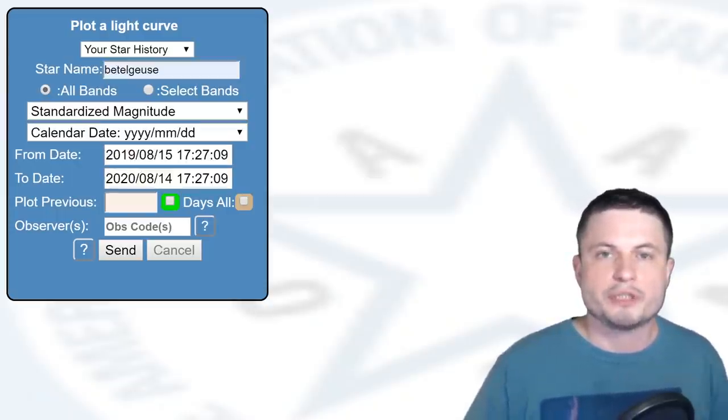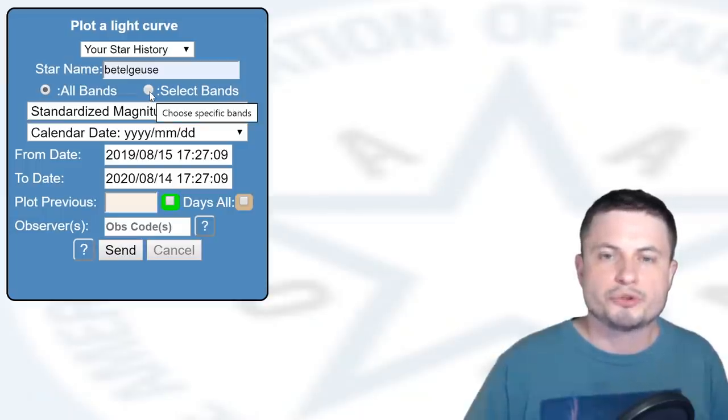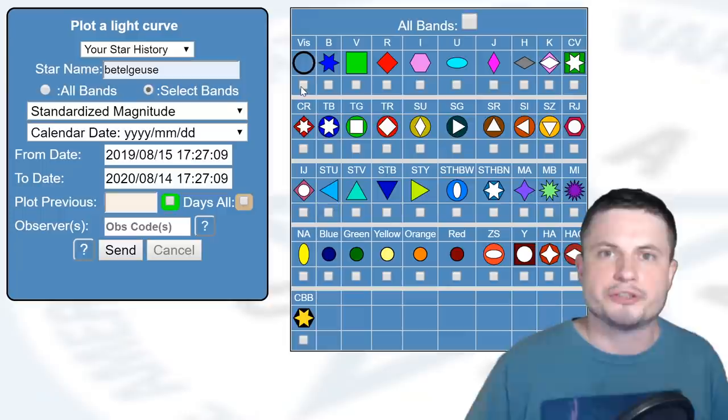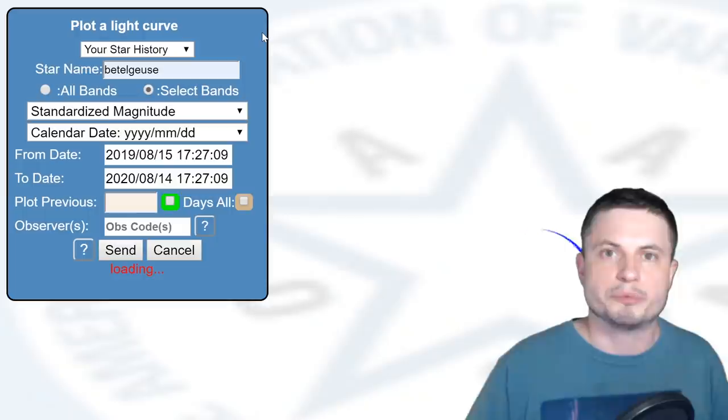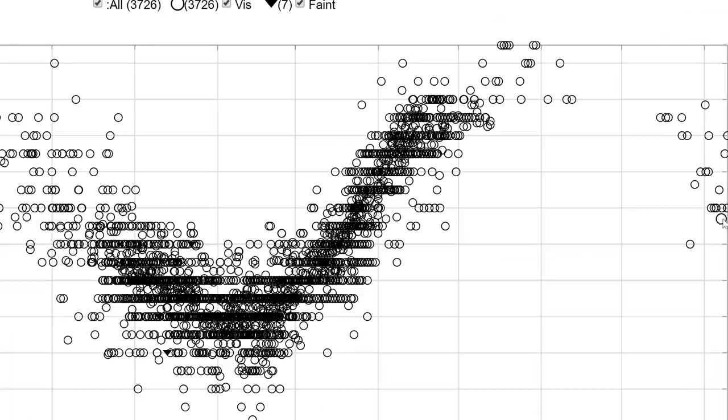So first of all, here we can choose the name of the star, we can also choose the dates. I'm only going to do one year starting from today. And I'm also going to select the bands. I'm only interested in visual band here because that's the most populated one. And then we're just going to see what it's going to produce for us. And you'll notice right here at the end, once again it started dimming.